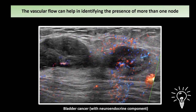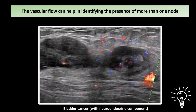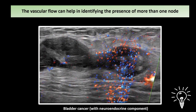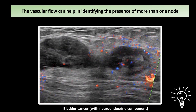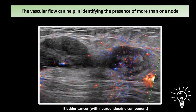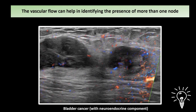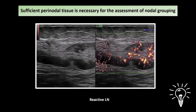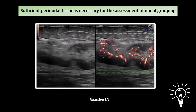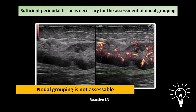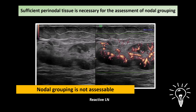It is not always easy to decide if an ill-defined mass represents multiple lymph nodes merged together or a single large lymph node. In these cases, color Doppler can help — for example, in grouping infiltrated lymph nodes from blood cancer, two different hilar vessels are clearly visible in the dotted circles. To determine grouping in video clips or static images, sufficient perinodal tissue is necessary; otherwise, nodal grouping is not accessible.